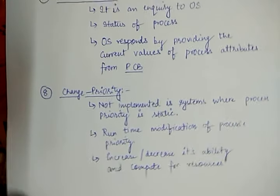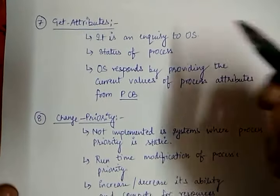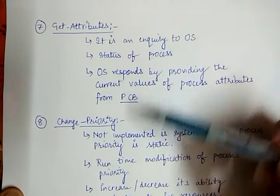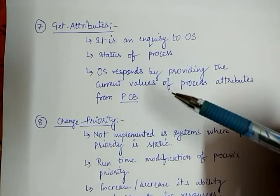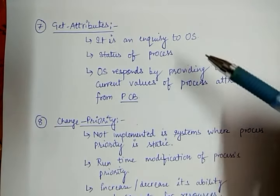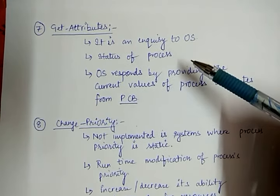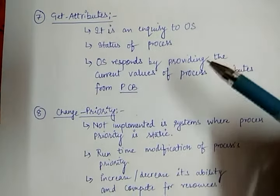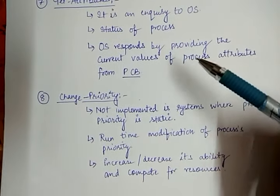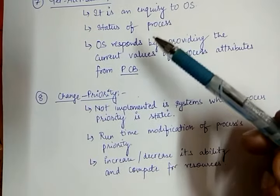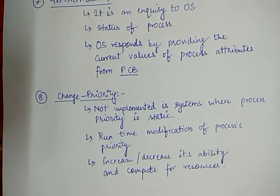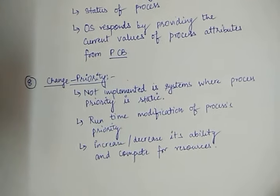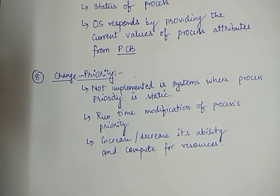So these were the last two system calls, or operating system services: Get Attributes and Change Priority. That's all from the operating system services used for process management — these were all the system calls implemented in UNIX. Thank you for watching. If you have any query, you can ask in our comment section, and kindly subscribe. Thank you.